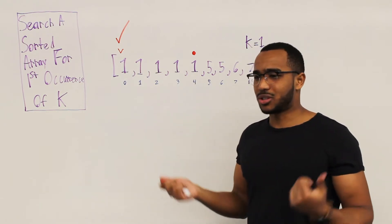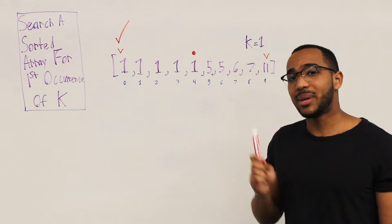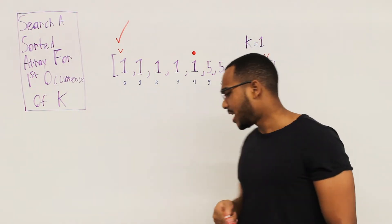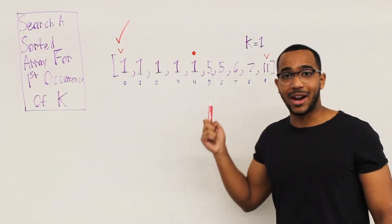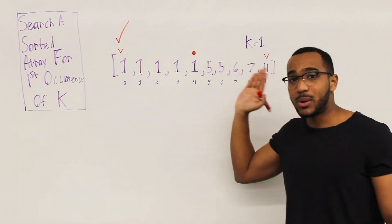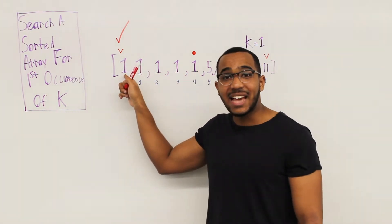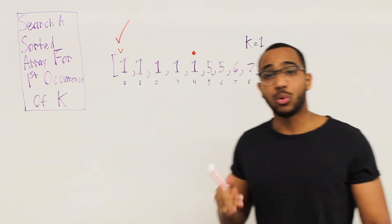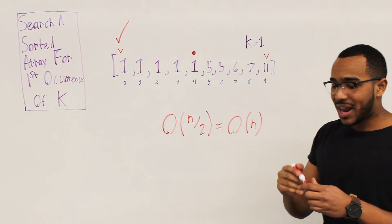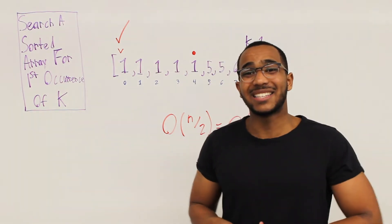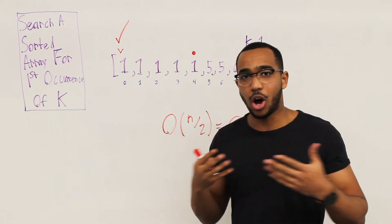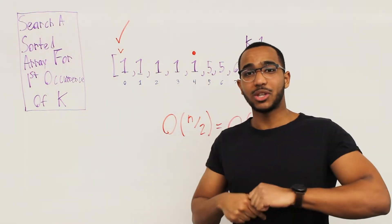What is the problem with this approach? The worst case is if during our binary search we find k and then walk backwards, and k is at the very beginning of the array. We do n/2 work, which turns into O(n) work. Our time complexity worst case becomes linear time, scaling linearly with the input. We don't want this — we want to keep it O(log n), splitting our search space and doing logarithmic time.